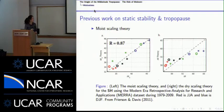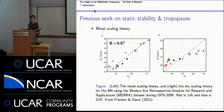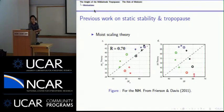Frierson and Davis 2011 used the MERRA reanalysis dataset to compare moist and dry scaling theories. The moist scaling theory — using the meridional gradient of θE — matches the vertical gradient of θE with a correlation of about 0.87, much better than the dry scaling counterpart. The moist scaling theory also works better in the Southern Hemisphere, with a correlation of 0.7, still exceeding the dry theory.